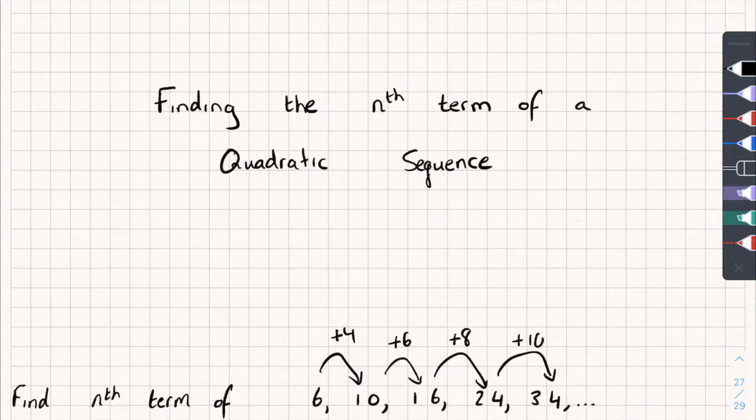Now, this isn't linear because if it was, each of these common differences would be the same. So what we're going to do from here is look at the second difference, which is the difference between these differences. So 4 to 6, that's plus 2, 6 to 8, again plus 2, and so on. Now you'll notice these are all plus 2, and that means we have a quadratic sequence, not because they're plus 2, but because they're the same.